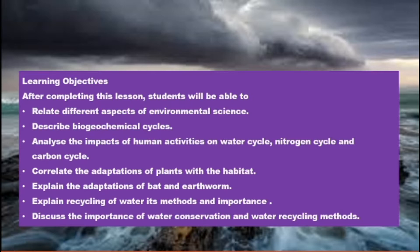We should be able to describe biogeochemical cycles — the water cycle is one example. Nutrients and other important things exist in the form of cycles. We should also analyze the impact of human activities on the water cycle, nitrogen cycle, and carbon cycle.